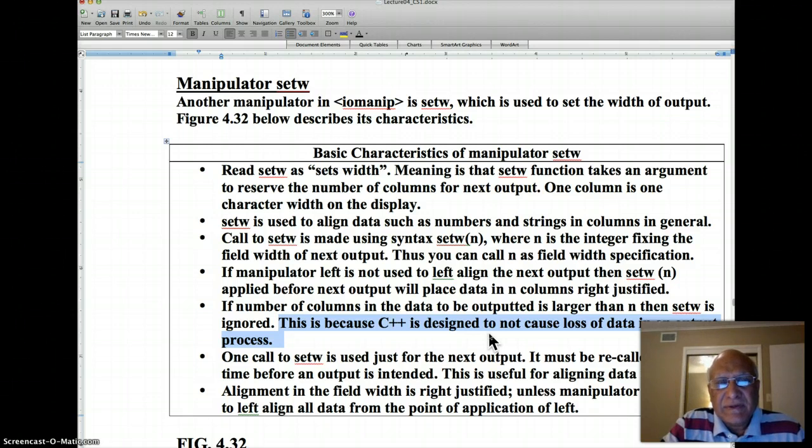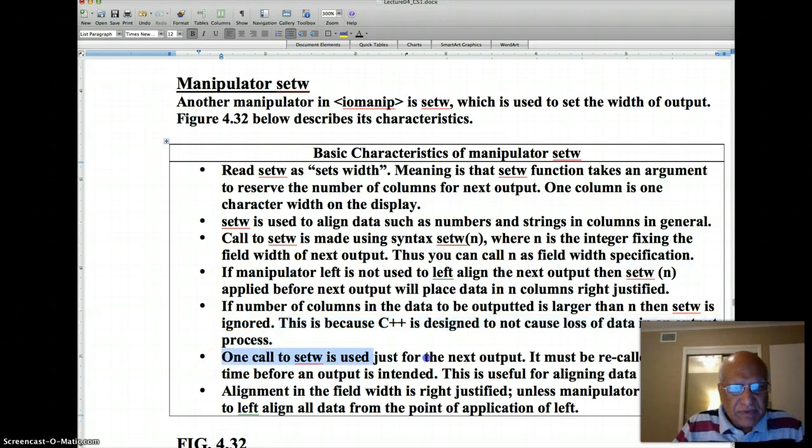SetW is ignored if your data happens to be larger width than the width defined by setW. One call to setW is used just for that output that is being made next to it. It must be recalled each time before an output is intended. This is useful in aligning data in columns. Alignment in field width is right justified unless manipulator left is used to left align all the data from point of application where left was used.